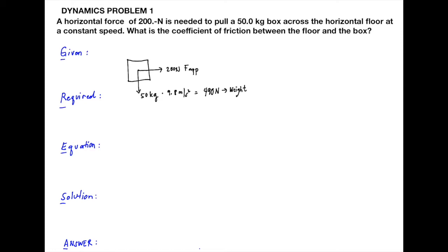We also have the normal force and the frictional force as components. For our problem, we are required to find the coefficient of friction, which is unitless because the Newton units cancel out when we apply the formula. Our equation is: frictional force equals coefficient of friction multiplied by the normal force.